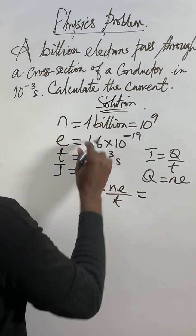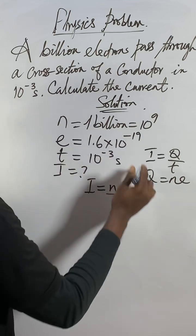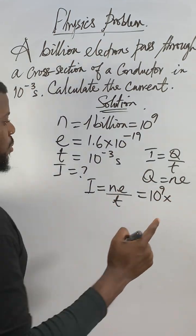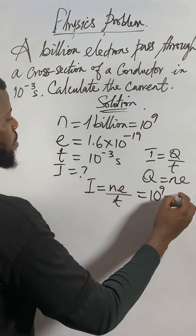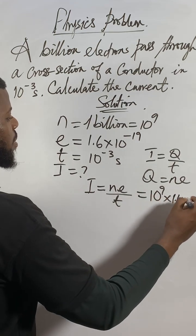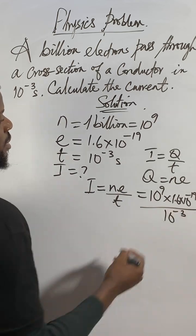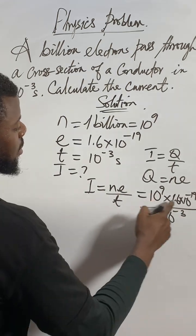So now, carry all the parameters and plug them inside. N is 10 to the power of 9 times e, the charge of an electron which is 1.6 times 10 to the power of negative 19, over time 10 to the power of negative 3.